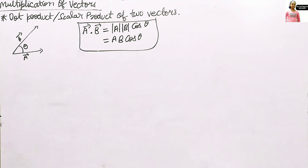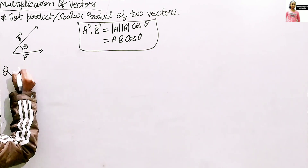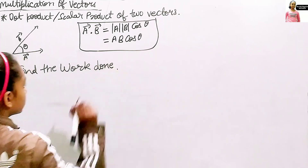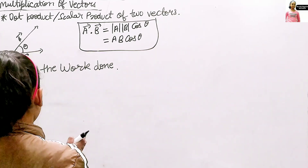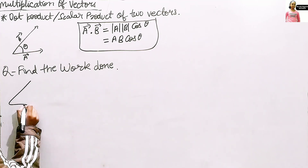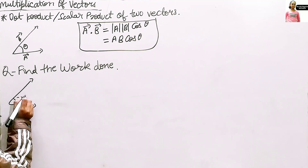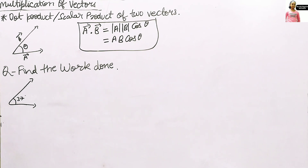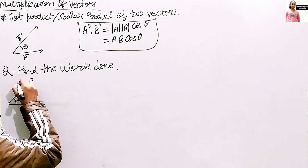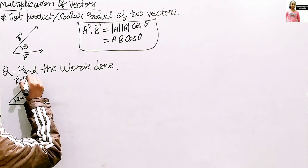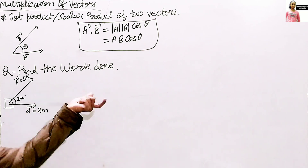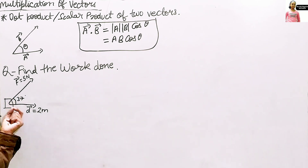Now let's take a question: Find the work done. A figure is given where displacement equals 2 meters, force equals 5 Newtons, and the angle theta equals 37 degrees.